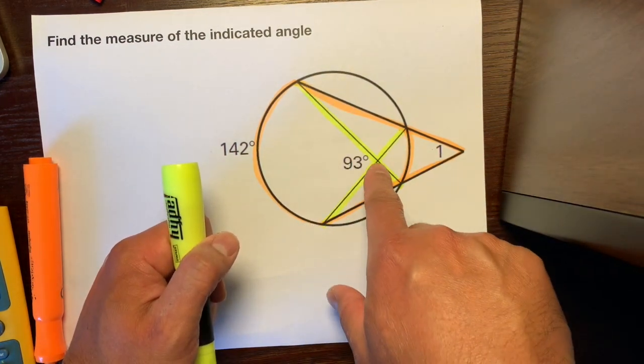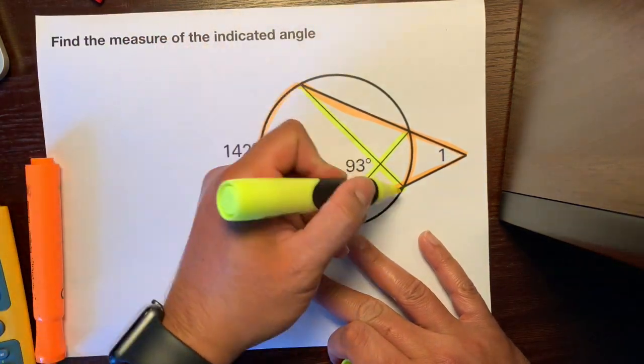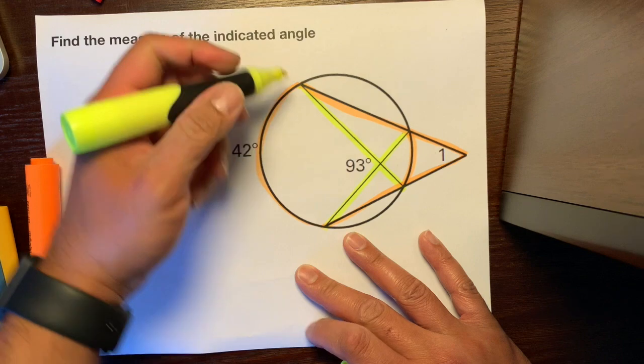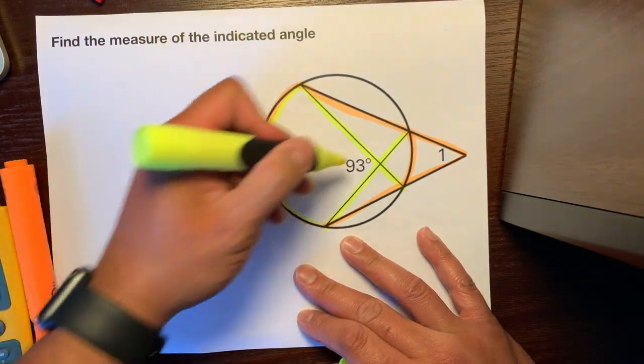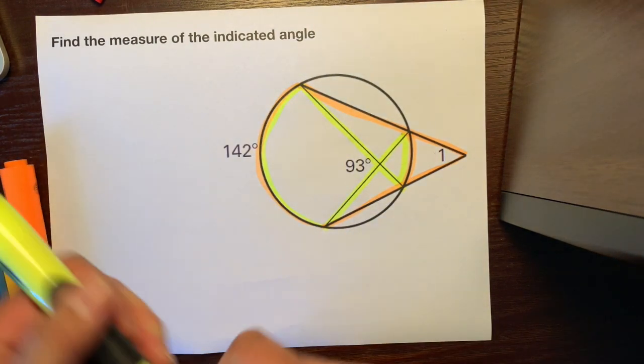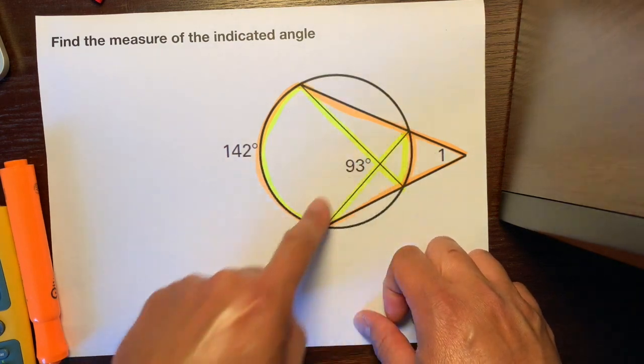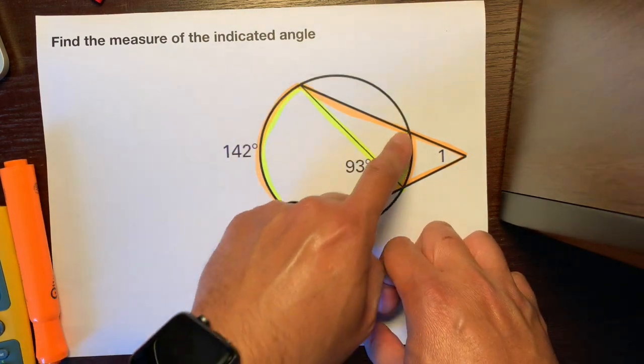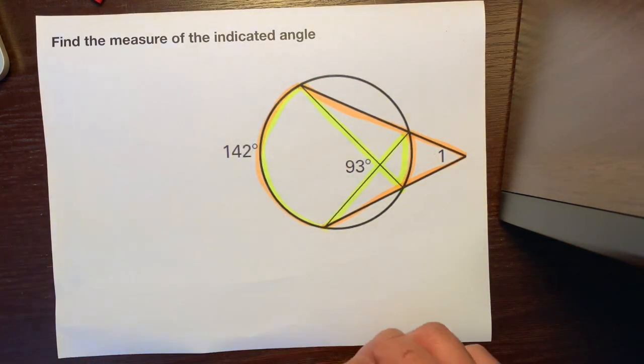For chords that intersect on the inside of the circle, we take the two arcs that are being eaten by those two lines, which is this arc right here and this arc right here. So it looks like we have everything we need for the lines that intersect inside. Let's just focus on this yellow greenish highlight.